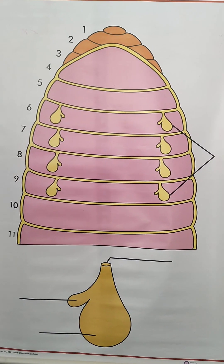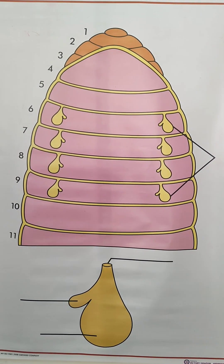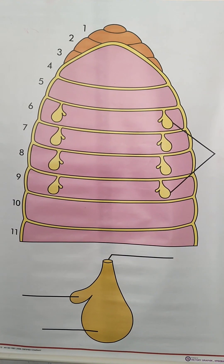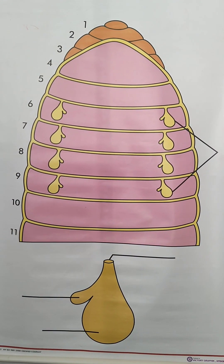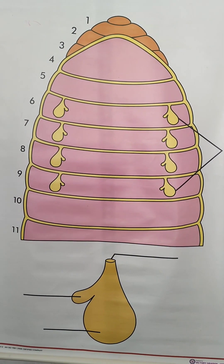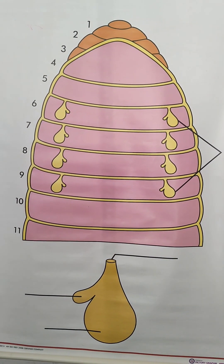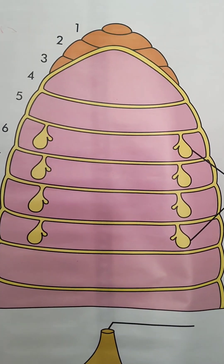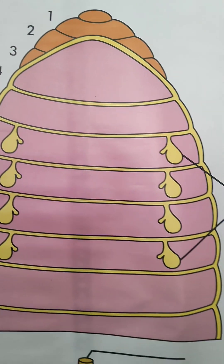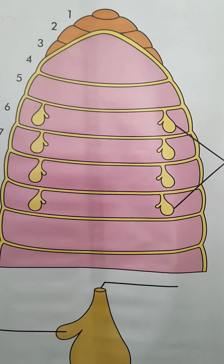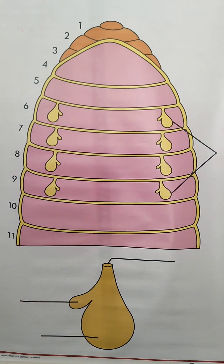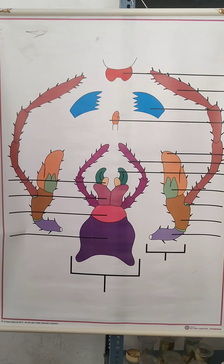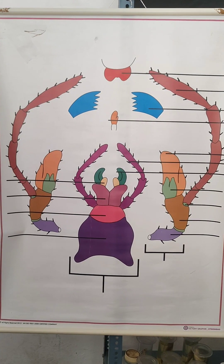This is the earthworm's spermatheca. Here, the yellow balloon-like structure is the spermatheca, and the ampulla region and diverticulum are also shown, along with the spermatheca opening.